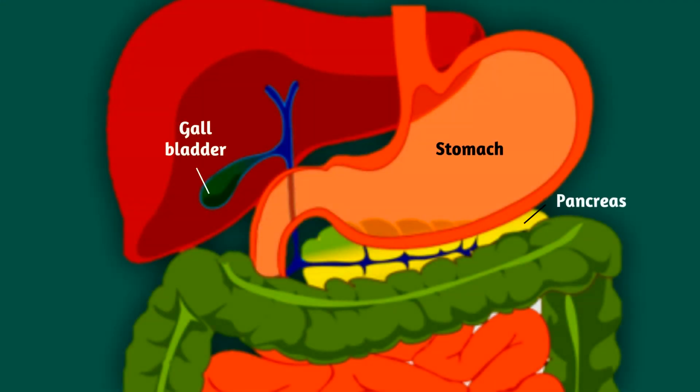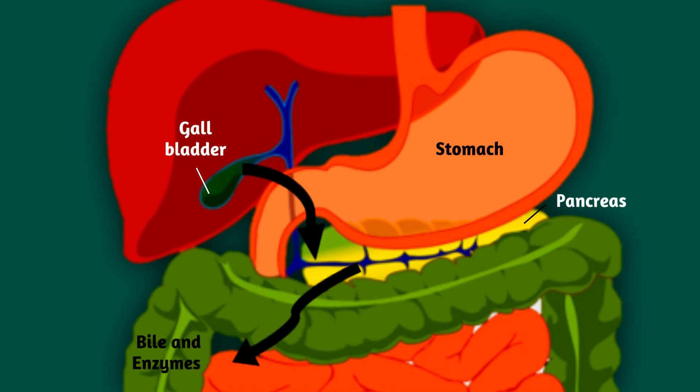This CFTR gene is also found in digestive ducts where the stomach and small intestine connect, allowing bile and enzymes from the pancreas to enter the small intestine to digest food. Defective CFTR prevents release of these substances, causing malnutrition — a symptom of cystic fibrosis.